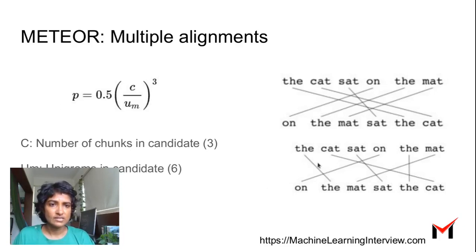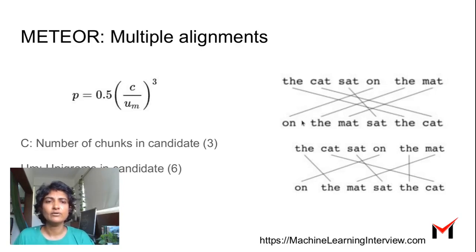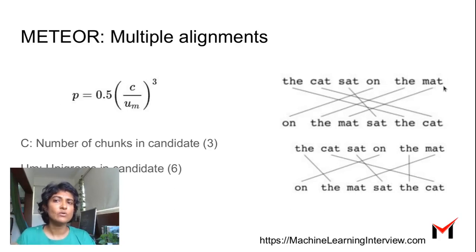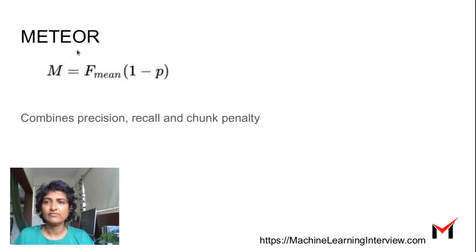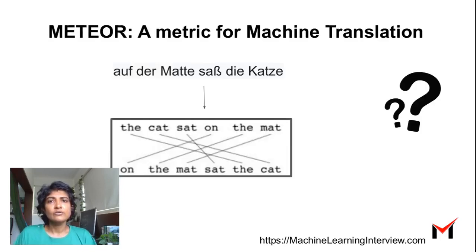Among all possible alignments between the candidate and reference, we select the one that results in the fewest number of chunks. For instance, we avoid mapping 'the' to a different 'the' if it increases chunks. The chunk penalty is then combined with the harmonic F-score of precision and recall to produce the final METEOR score.